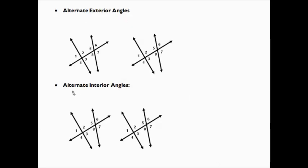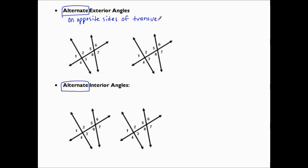Let's compare alternate exterior angles and alternate interior angles together. They are very similar in wording — they both use the word alternate. Alternate refers to opposite sides of the transversal. Remember the transversal is the line that's crossing both lines.